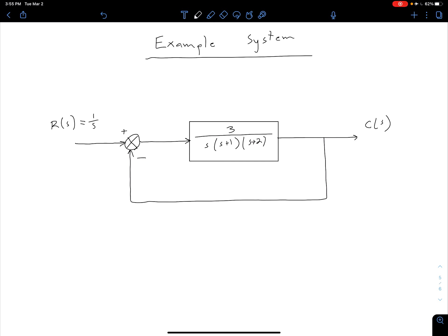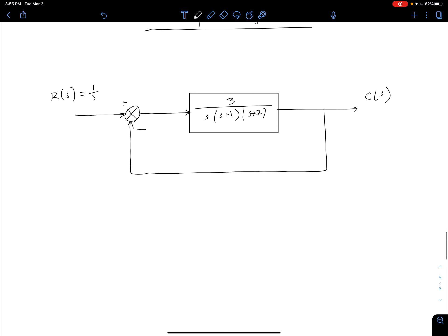So our c of s then is going to be our unit step response. We can use our equation from our feedback form from the previous unit and we can say our equivalent transfer function is G over 1 plus G times H.